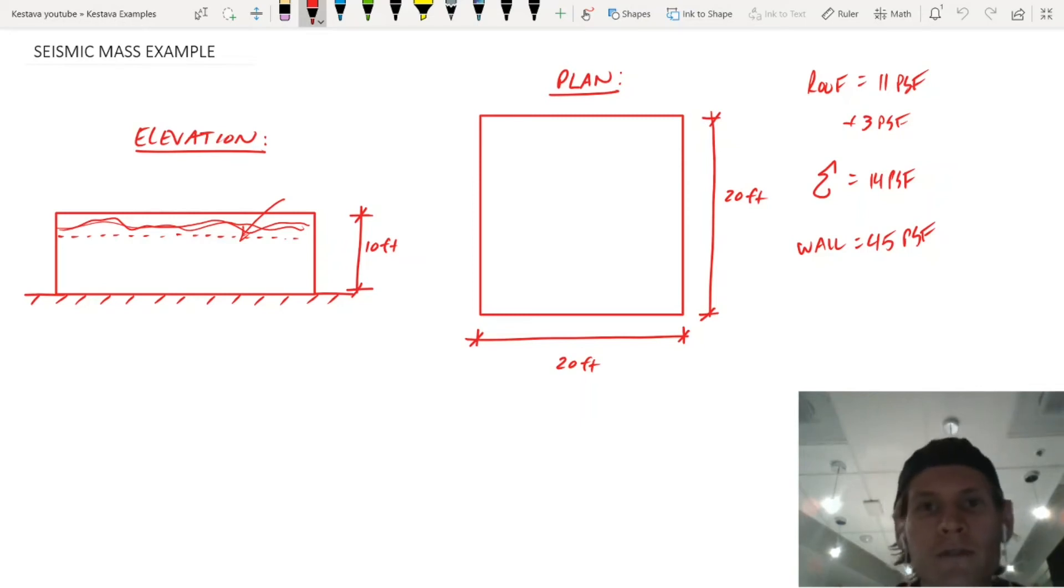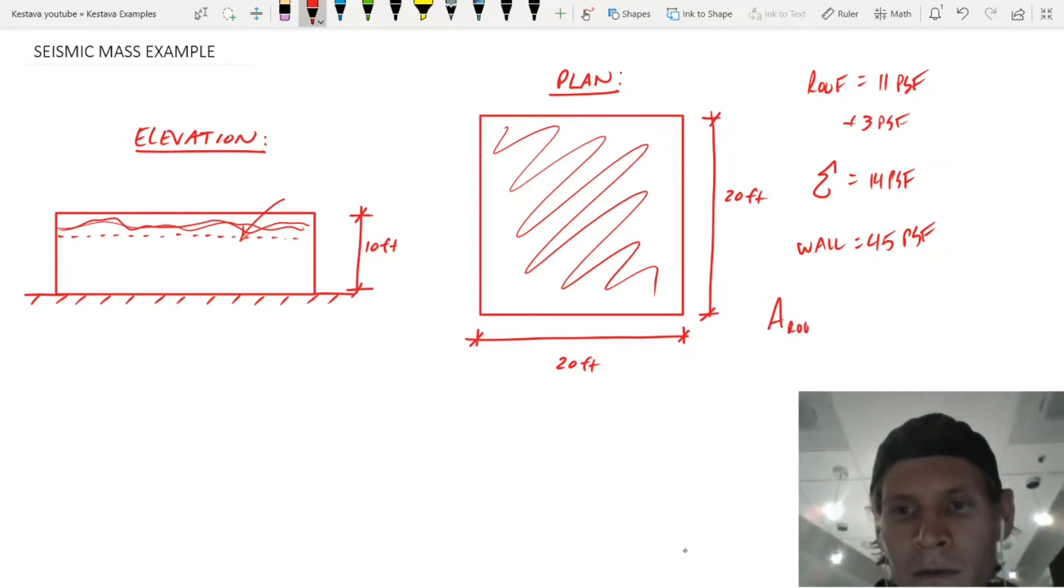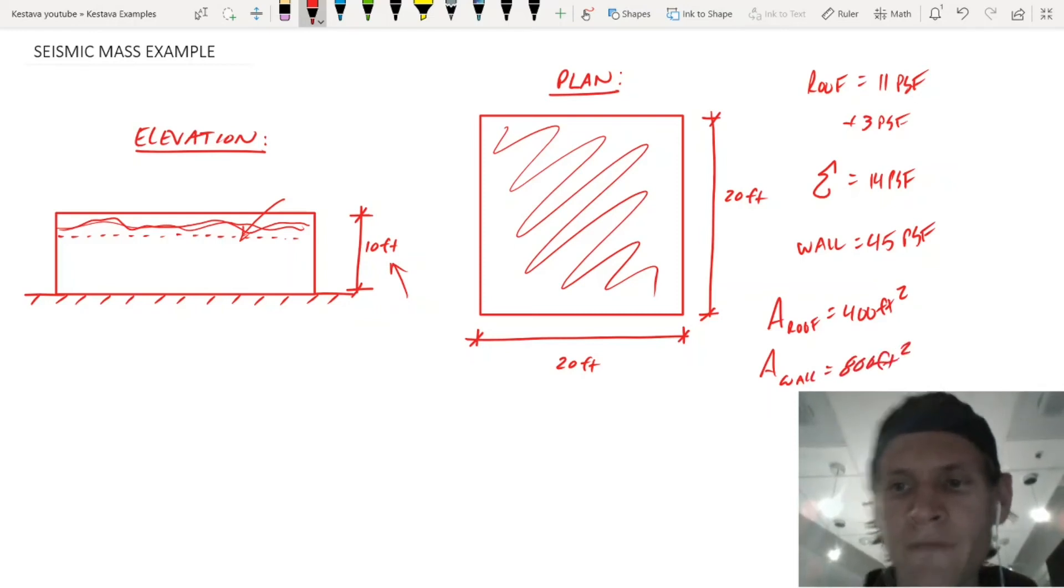All right, we have everything that we need. So all you do now is just multiply those pounds per square foot by some square footage. So roof, we'll do first. Roof, you're going to use the plan view, and we're going to get this entire area of the roof. So we have 20 by 20 is 400 square feet. Roof is 400 feet squared. And then for the perimeter of your wall, we know our wall is 10 feet. And we know that the perimeter is going to be four times 20 feet because there's four 20 foot long walls. 10 times 20 is going to be the square footage of one wall. That's 200 square feet. And we're going to multiply that by four to get 800 square feet. So area of wall equals 800 square feet.